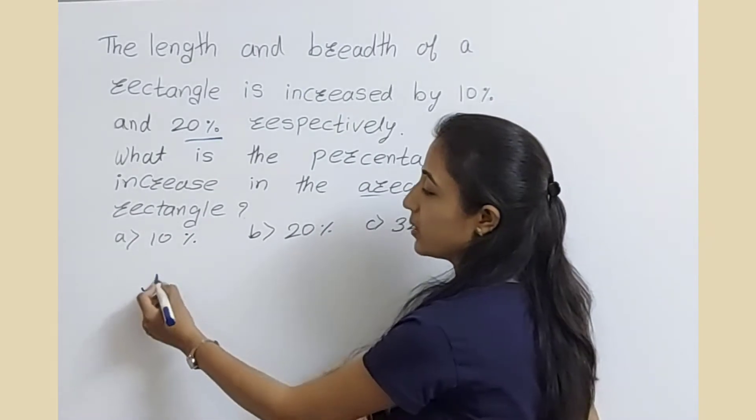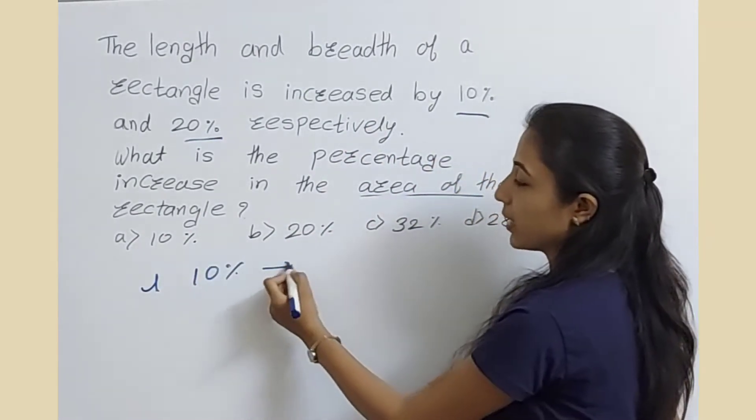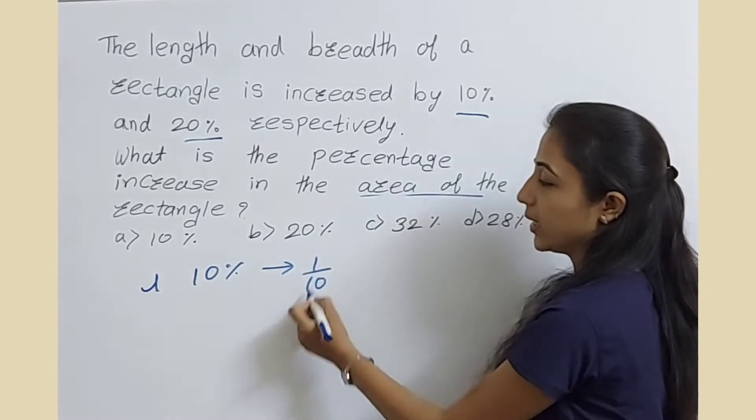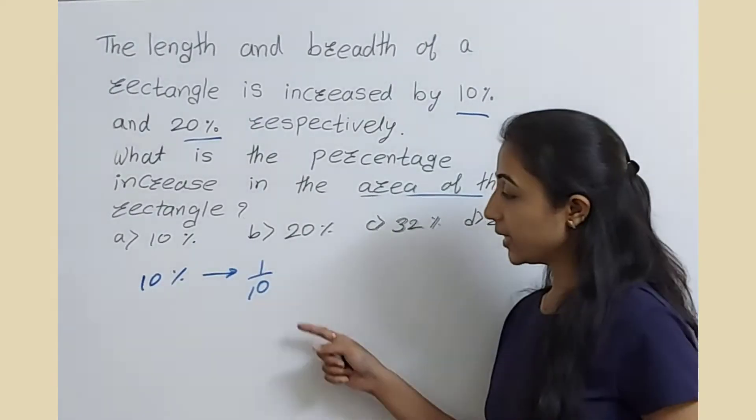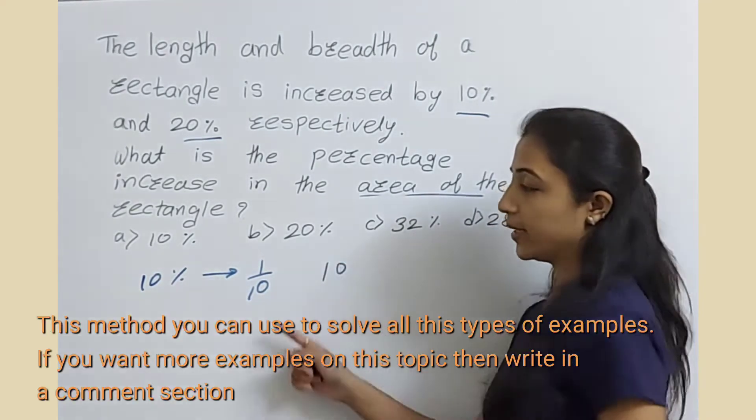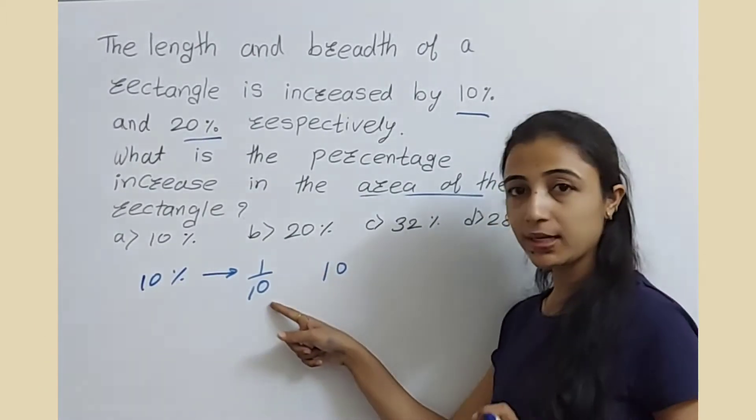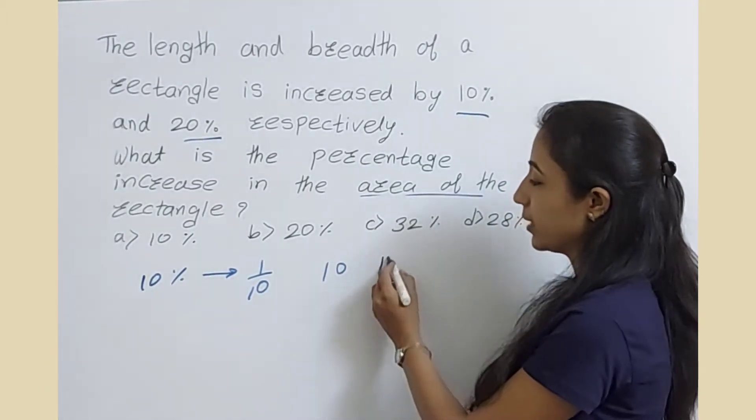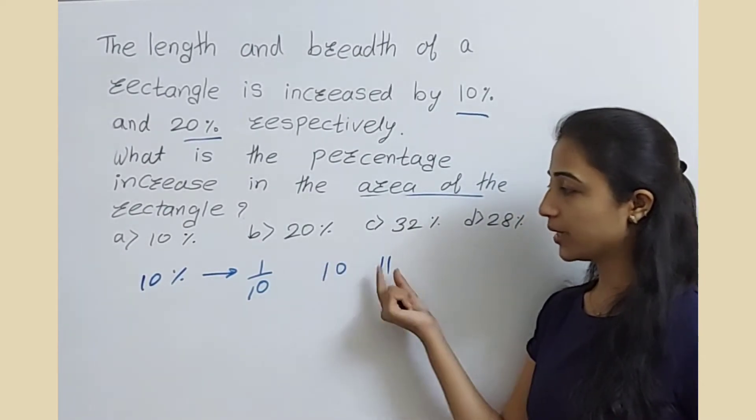Here the length is increased by 10%. We can write 10% as the ratio 1/10. The denominator denotes the old number, so old length is 10. If we add the numerator to the denominator, we get the new number. So the old length is 10 and the new length is 11.